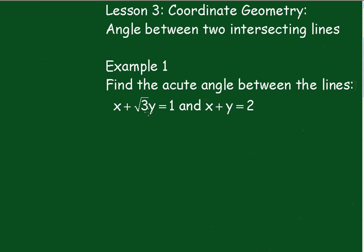In the first case here we get root 3y equals minus x plus 1. So y equals minus 1 over root 3 x plus 1 over root 3. Therefore we have m1 equals minus 1 over root 3.